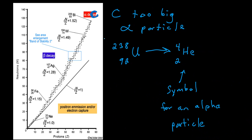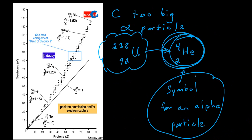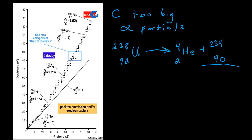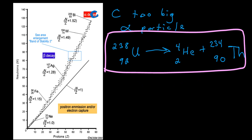An example of an element that goes through alpha decay is uranium-238 — it's just too big to be stable. The symbol He with a 2 and a 4 represents the alpha particle in our equation. The new element that forms has mass number 234 (234 plus 4 equals 238) and atomic number 90 (90 plus 2 equals 92). The new element created is thorium-234, produced by uranium-238 going through alpha decay by giving off an alpha particle.